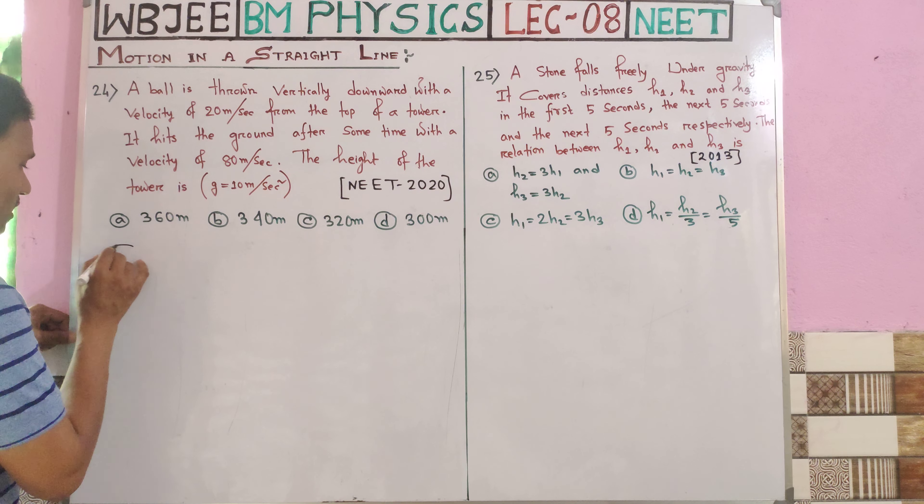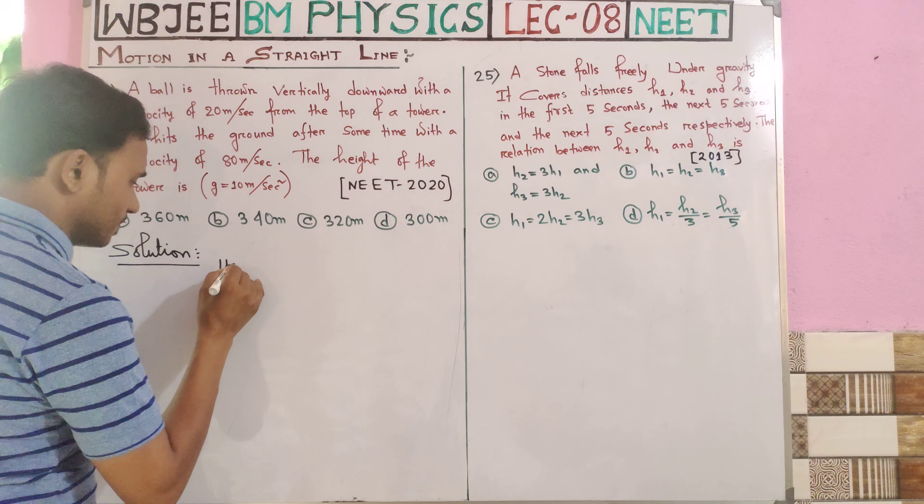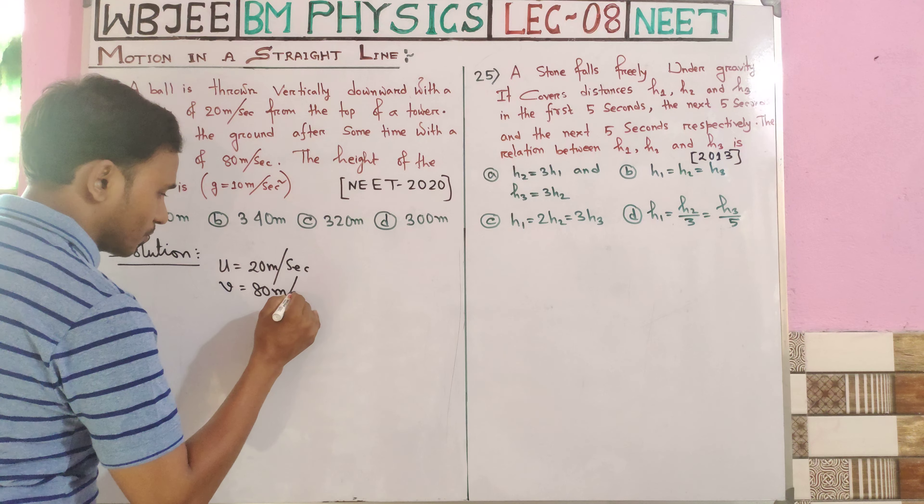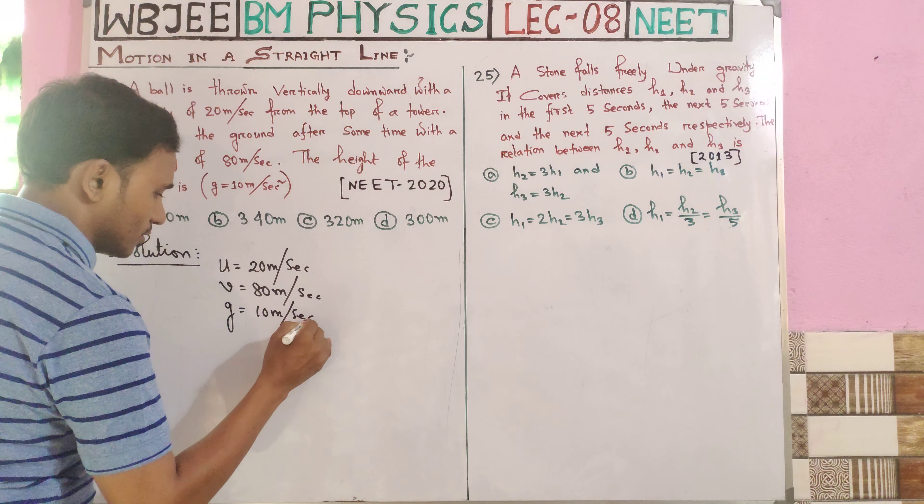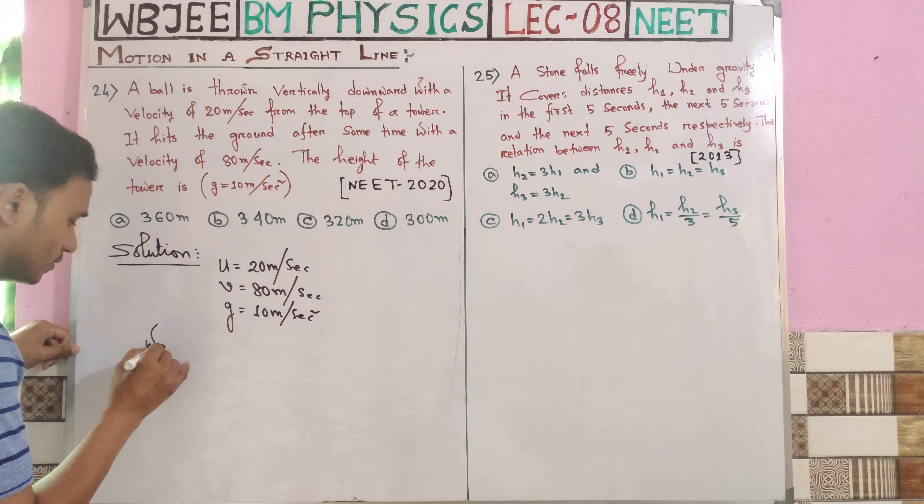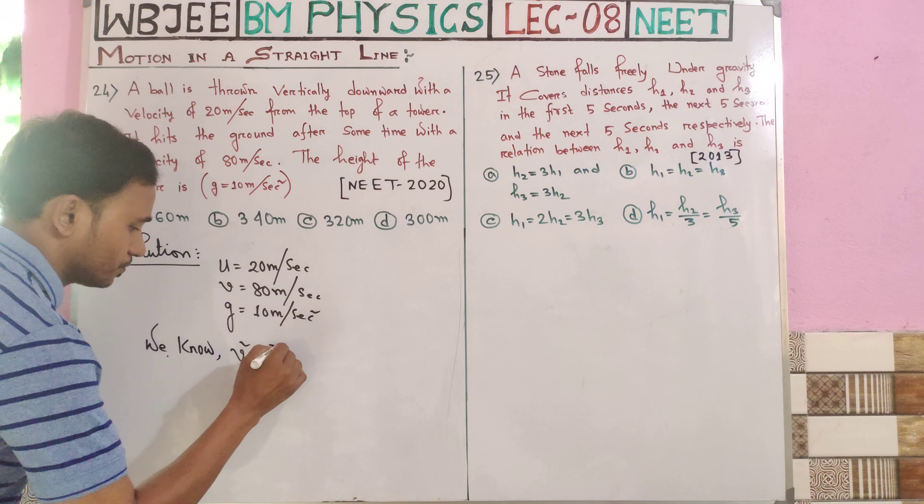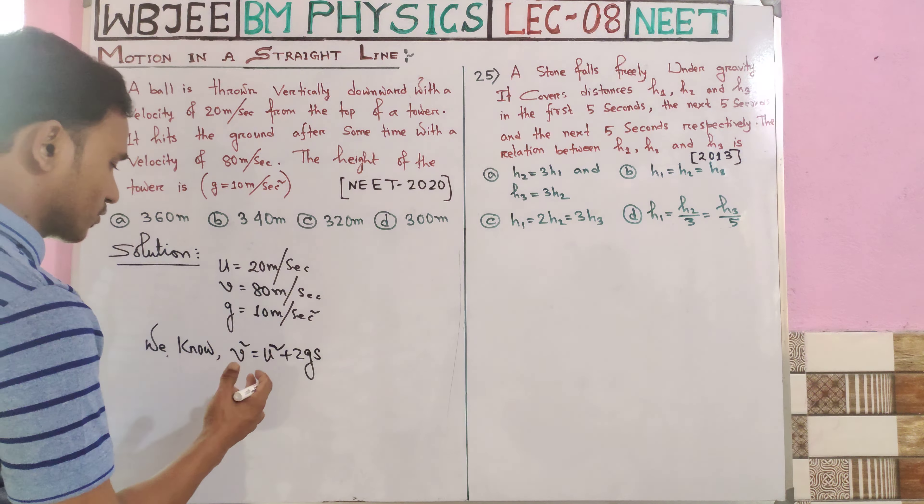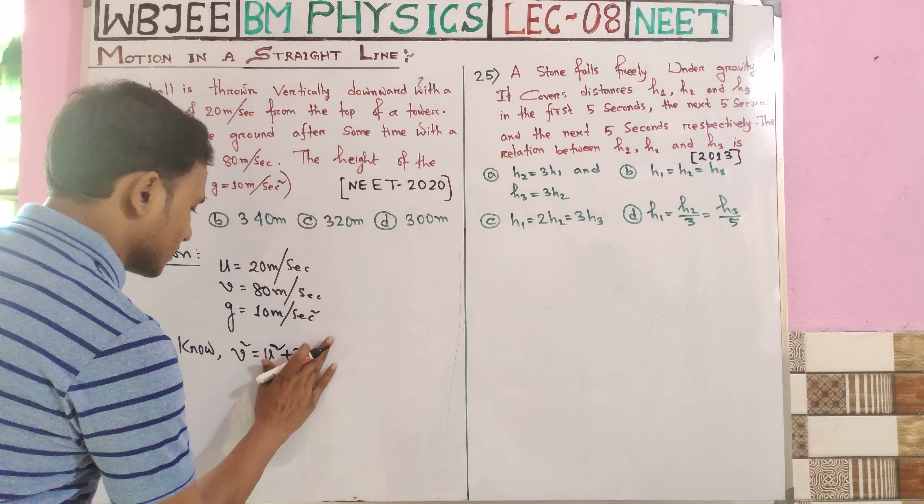Let me solve this step by step. The given information is: initial velocity U is 20 meters per second, final velocity V is 80 meters per second, gravitational acceleration g is 10 meters per second squared. We need to find the height of the tower.